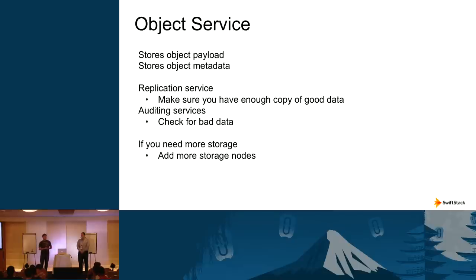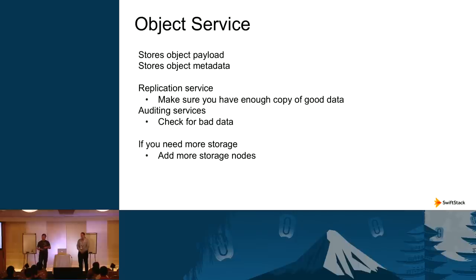There's also an auditing service that works alongside replication. Its job is to find data that's been corrupted or modified unwillingly — it scans all data and checks against the checksum written when data was first ingested. If there's a mismatch, it quarantines that piece of data and notifies the replication service to get a good copy from another location. The most common scaling use case is adding additional object storage services and disks when you need more space.